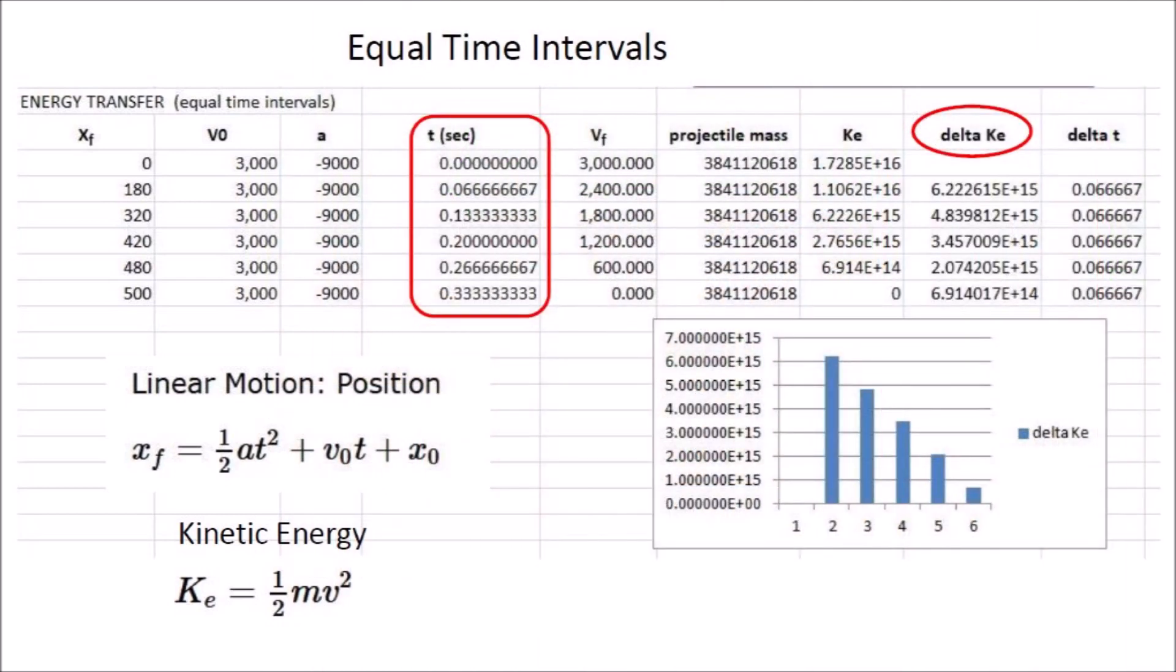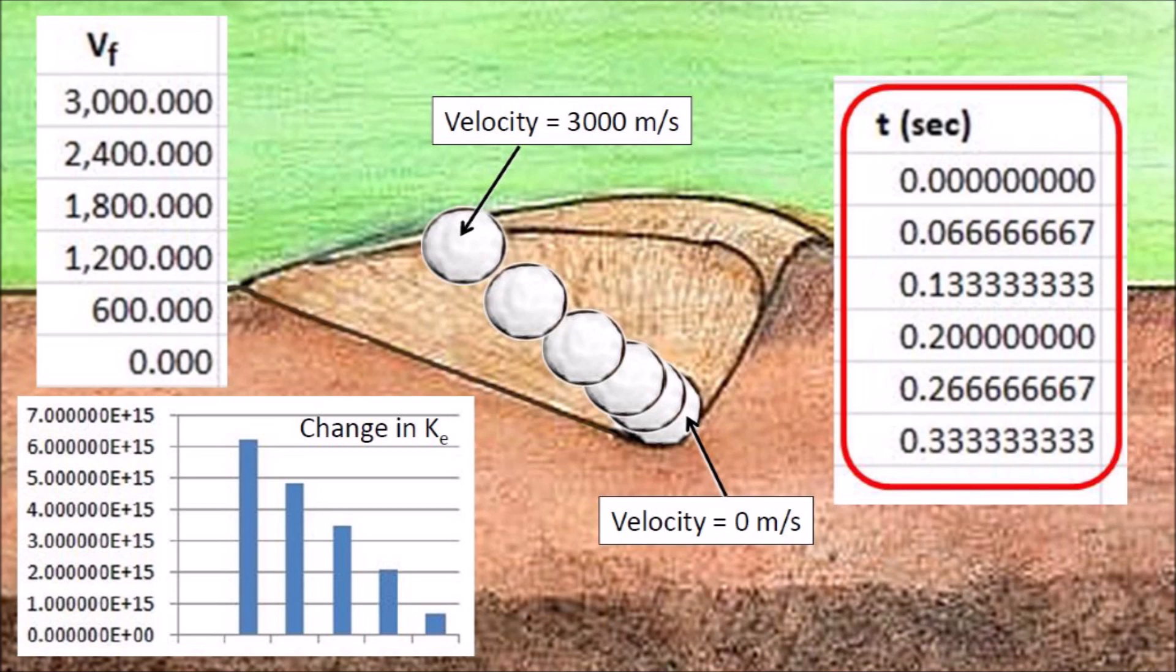Each time interval is one-fifteenth of a second, which is one-third of a second divided by 5. The chart on the right shows the dramatic decrease in kinetic energy for each time interval. The snapshots of the projectile at equal intervals of one-fifteenth of a second indicate that the speed decreases by 600 meters per second during each time interval. Notice that the snapshots of the projectile get more crowded close to the apex because the velocity of the projectile is decreasing continuously.